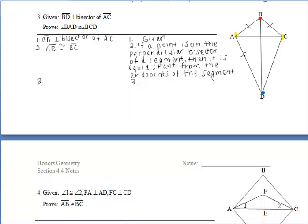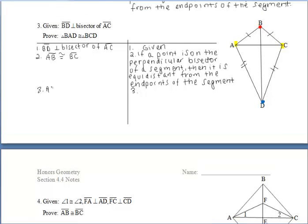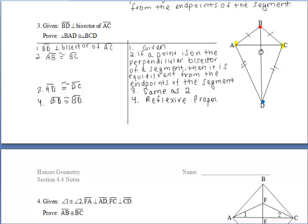We also have point D. Since D lies on the perpendicular bisector, D is equidistant from endpoints A and C, so segments AD and DC are congruent for the same reason. In the end, we want to prove triangles BAD and BCD congruent. We already have two pairs of congruent corresponding sides, so we use the reflexive property on segment BD since the two triangles share that side. That gives us a third pair of corresponding sides, so triangles BAD and BCD are congruent by Side-Side-Side.